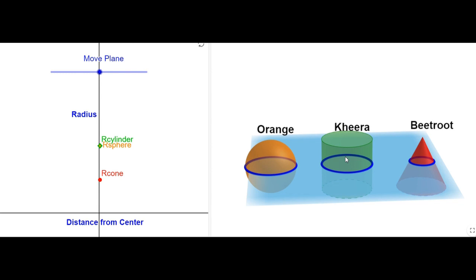And often we can relate it with the objects around us. We can see these shapes in oranges, kheera, and beetroot. That's how we talked about these objects in episode 7.